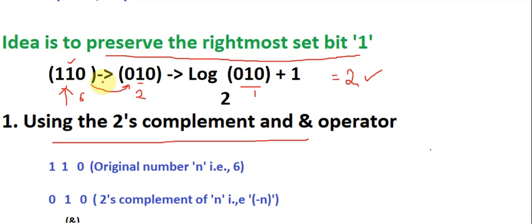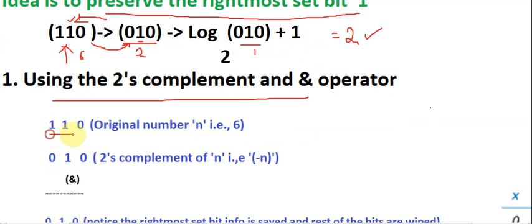We will see two different ways of obtaining this format from the original number n. The first method is two's complement with the AND operator. You take the original number n, then take the two's complement of n — which is minus n. The two's complement is one added to the one's complement, and the one's complement is flipping the bits — ones become zeros and zeros become ones.